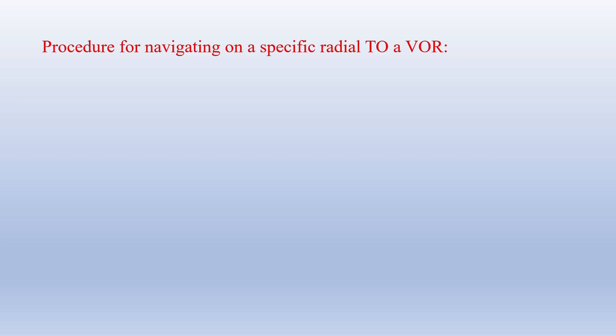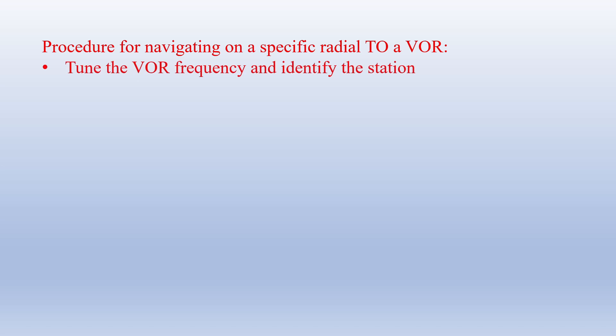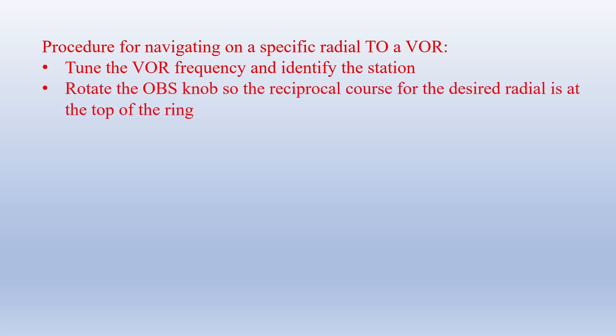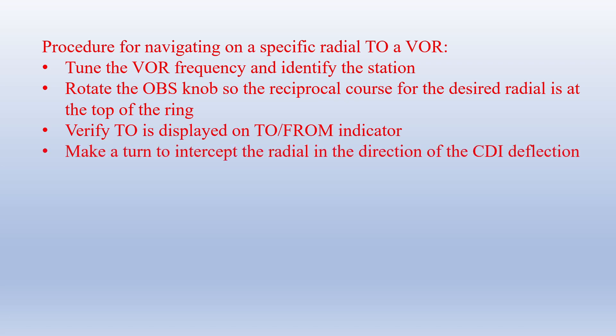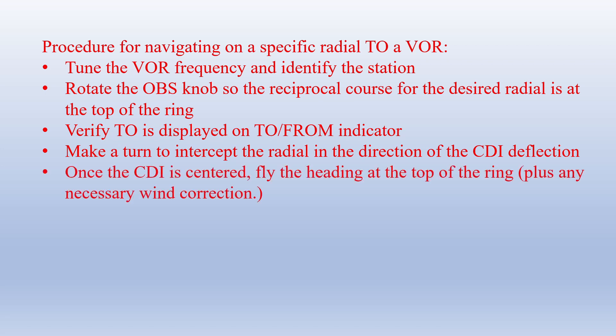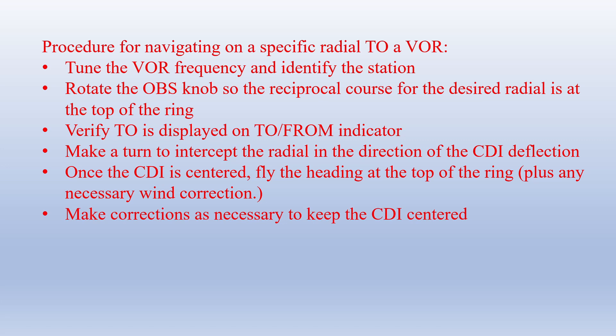To navigate on a specific radial inbound to a VOR: tune and identify the VOR, then rotate the OBS knob so the reciprocal course for the desired radial is at the top of the ring. Verify that TO is displayed on the To/From indicator. Make a turn to intercept the radial in the direction of the CDI deflection — 10 to 20 degrees if fairly close to the radial or station, a little more if further off. Once the CDI is centered, fly the heading at the top of the ring plus any necessary wind correction, and make corrections to keep the CDI centered as you track to the VOR.